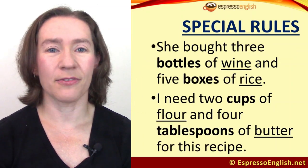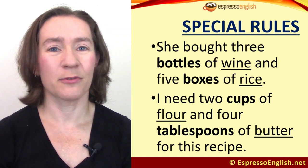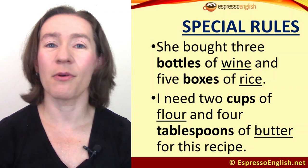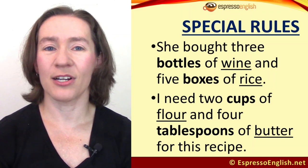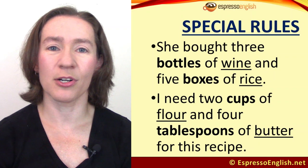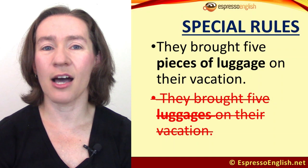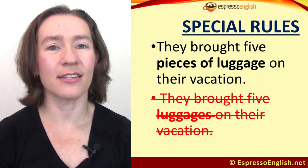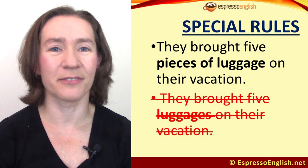So how can we quantify uncountable nouns? You can use other words to help. For example: 'she bought three bottles of wine and five boxes of rice.' 'I need two cups of flour and four tablespoons of butter for this recipe.' We use countable words for measurements, quantities, or containers. It's also very common to use the word 'piece' — for example, 'they brought five pieces of luggage on their vacation.' Don't say 'five luggages' — say 'five pieces of luggage.'